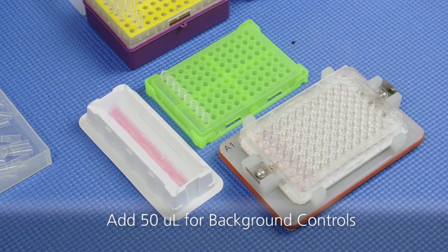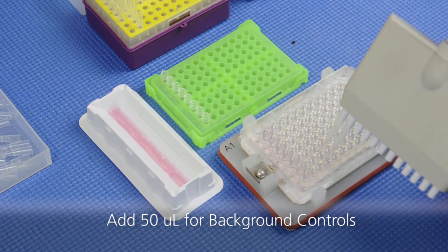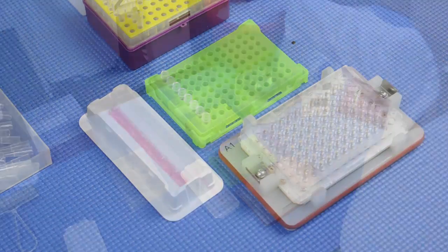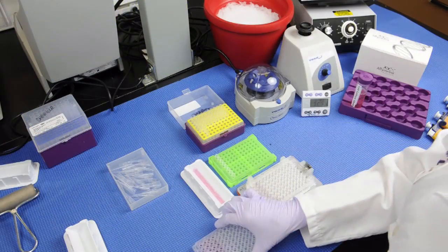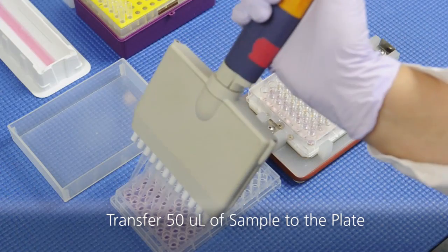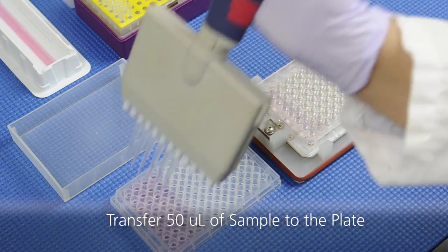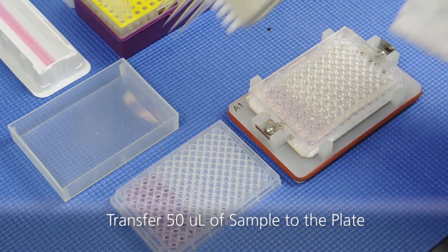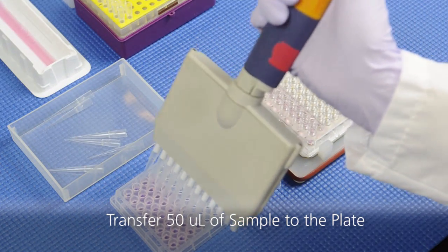Pipet 50 microliters of cell culture media into two wells of the flat bottom microtiter plate to act as the background controls. Next, pipet the cell culture supernatant samples from your source plate into the flat bottom plate.